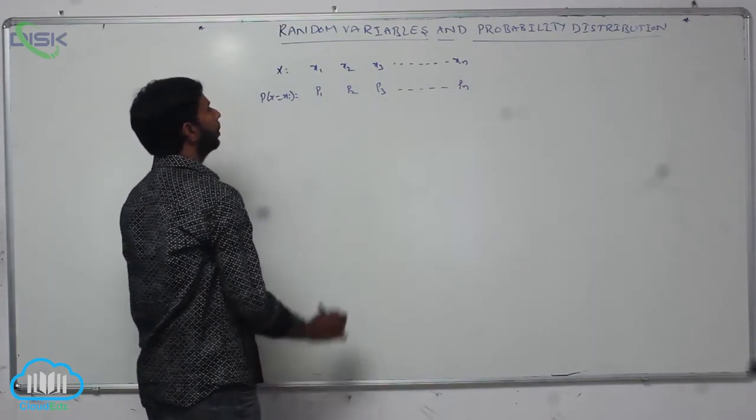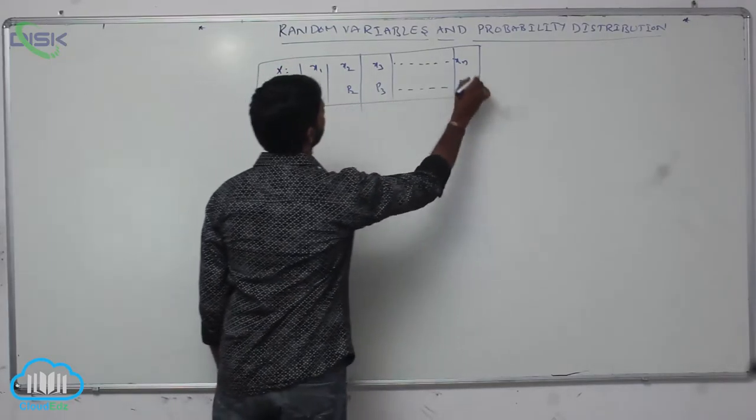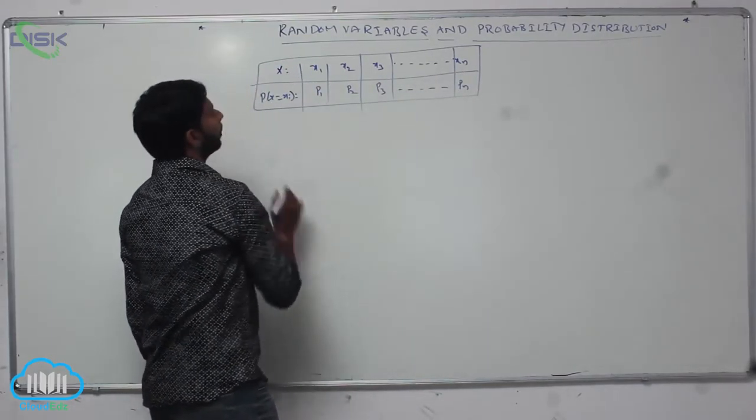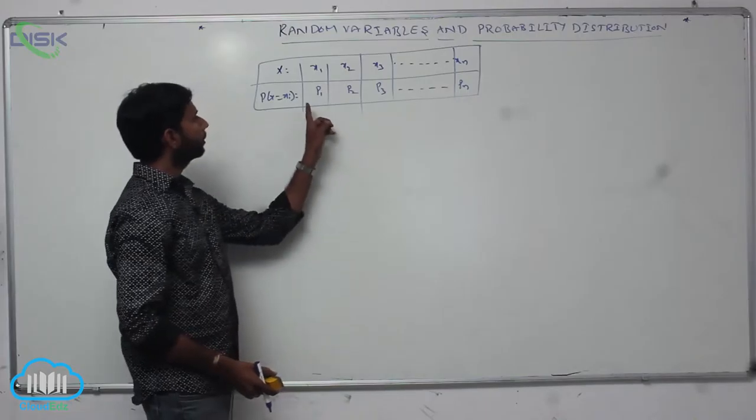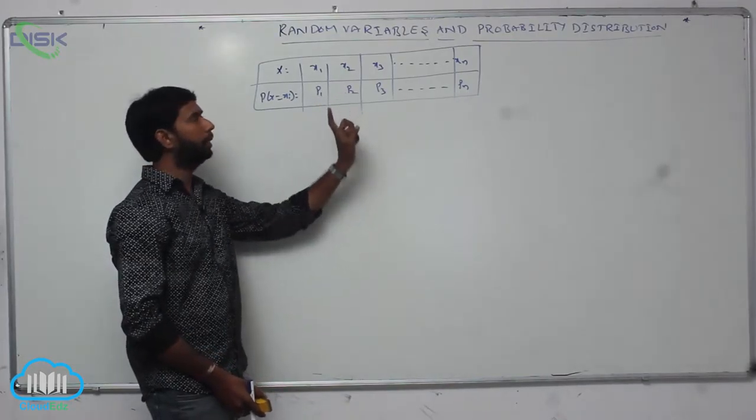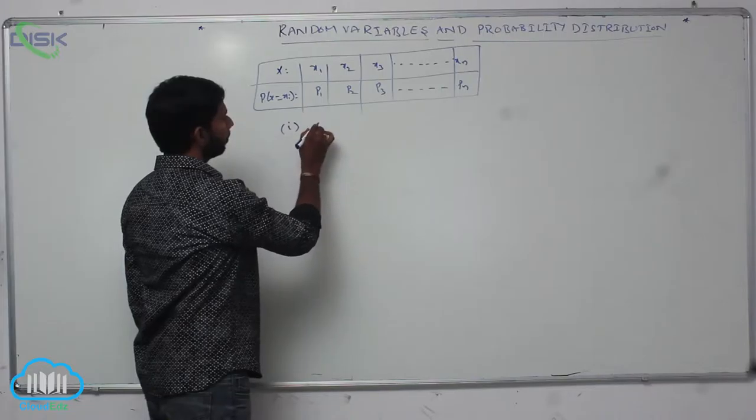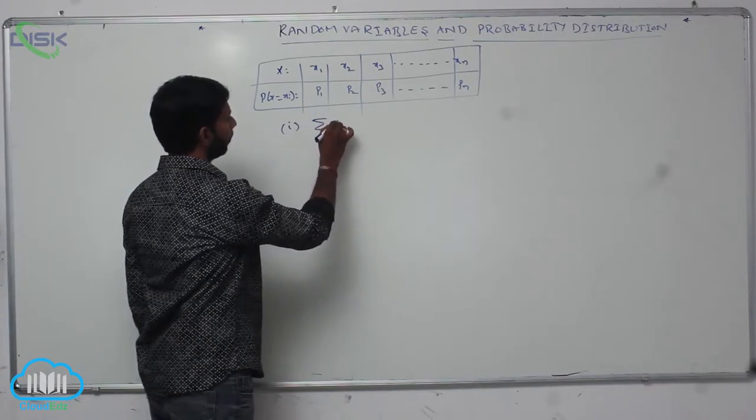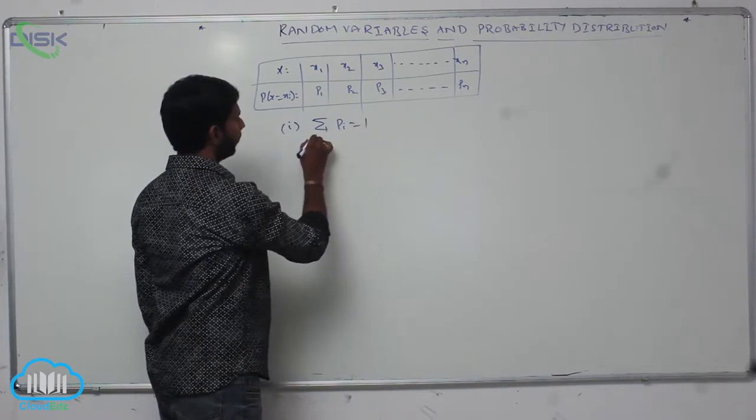This is a random experiment having events X1, X2 and so on Xn, and their corresponding probabilities are P1, P2, P3 and so on Pn. First one: sum of probabilities, that is sigma over i equals 1 to n, Pi equals 1.